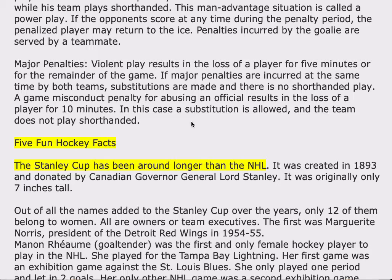Five fun hockey facts. The Stanley Cup has been around longer than the NHL. It was created in 1893 and donated by Canadian Governor General Lord Stanley. It was originally only seven inches tall. Out of all the names added to the Stanley Cup over the years, only twelve of them belong to women — all are owners or team executives. The first was Marguerite Norris, president of the Detroit Red Wings in 1954–1955.